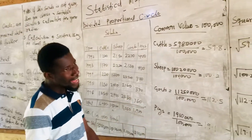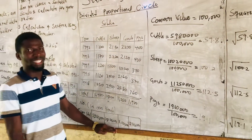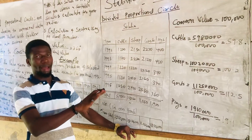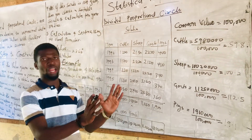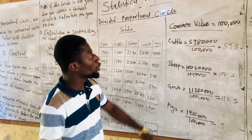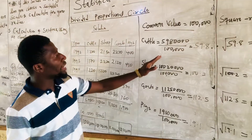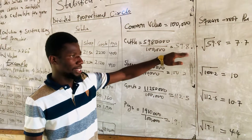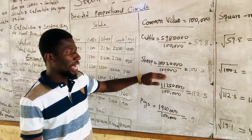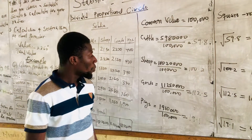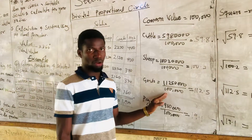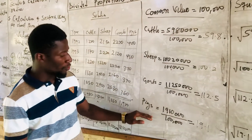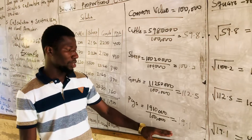Now let's apply Step 1. The total values are too huge for us to calculate square roots easily, so we need to find a common number to divide to make the numbers smaller. We choose a common value of 100,000. Cattle divided by 100,000 gives 59.8. Sheep divided by 100,000 gives 100.2. Goats divided by 100,000 gives 112.5. Pigs divided by 100,000 gives 19.1.